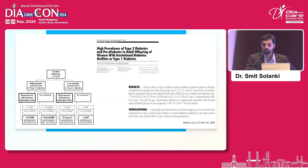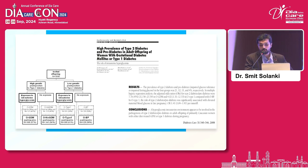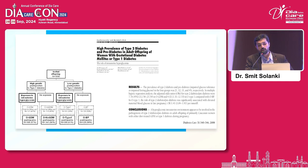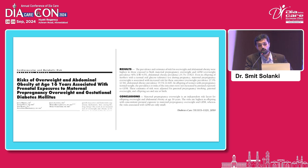So why do we need to prevent GDM? This paper shows that the hyperglycemic intrauterine environment appears to be involved in the pathogenesis of type 2 diabetes and pre-diabetes in adult offspring of women with either diet-treated GDM or type 1 diabetes during pregnancy. Around 1,000 offspring were tested, and the highest prevalence of hyperglycemia was found in offspring of GDM mothers or type 1 diabetic mothers. Maternal pre-pregnancy overweight is an independent risk factor for offspring overweight and abdominal obesity at age 16, especially with concomitant prenatal GDM exposure.